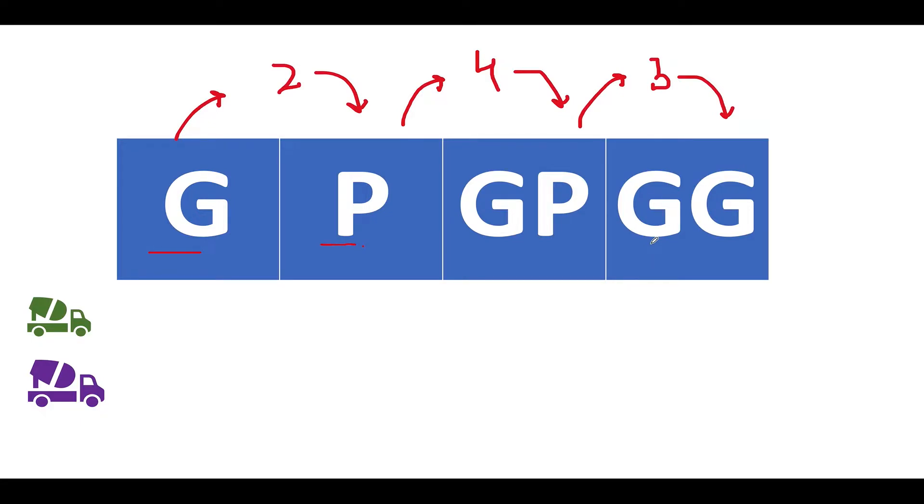Two trucks would be needed. The green one signifies the one that is responsible for collecting the glass garbage and the purple one is responsible for collecting the plastic garbage. It is also specified in the question that the cost of travel from this index to this index is two units, from the first index to the second index is four units, and from the second index to the third index is three units.